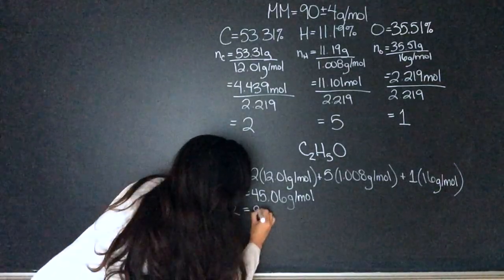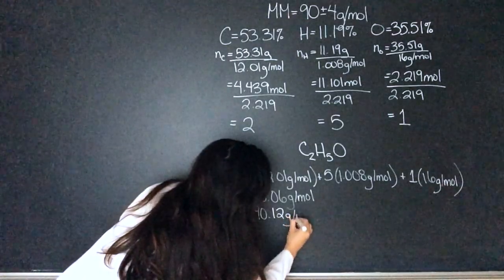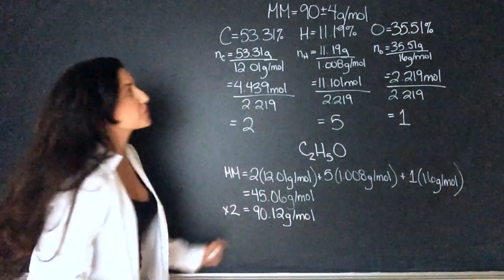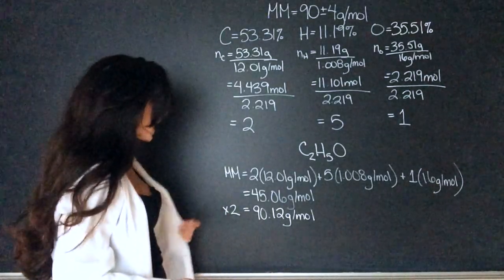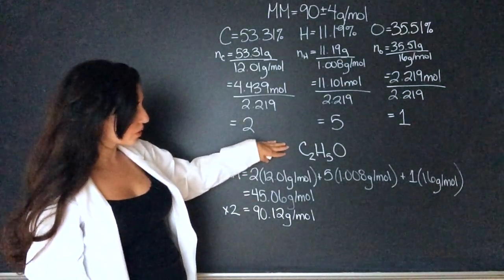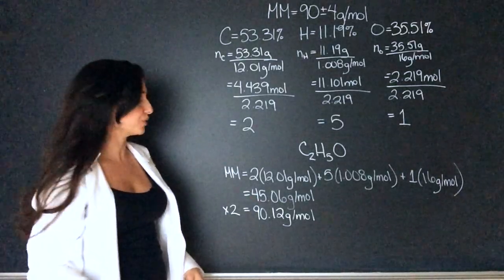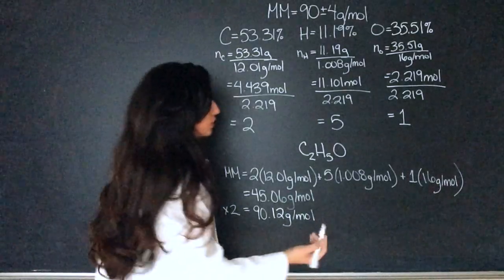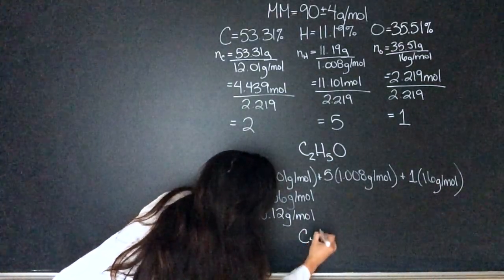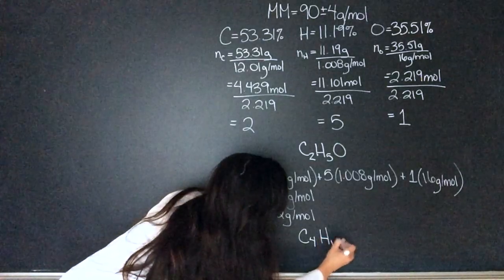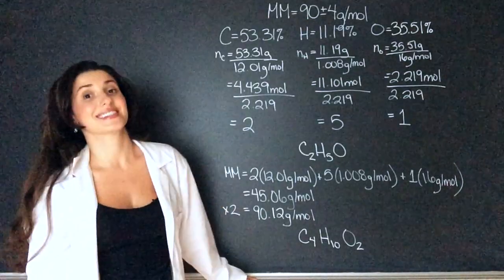Times 2, 90.12 grams per mole. That's within my margin of error, 90 plus or minus 4 grams per mole. So now I know that the empirical formula has to be multiplied by 2 to find the molecular formula. So my molecular formula is going to be C4H10O2 and it is that simple.